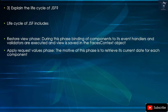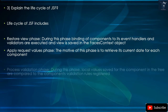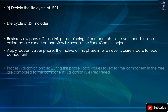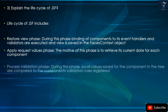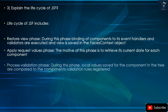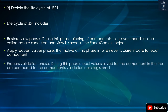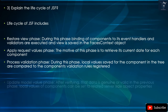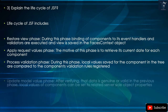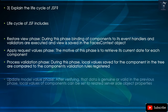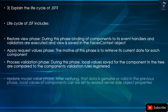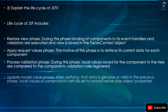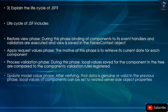Process Validation Phase — during this phase, local values saved for the component in the tree are compared to the component's validation rules. Update Model Values Phase — after verifying that data is valid from the previous phase, local values of components can be set to related server-side object properties.